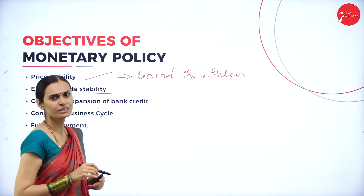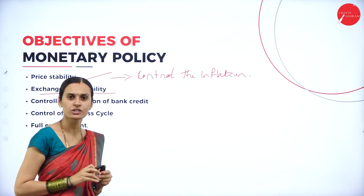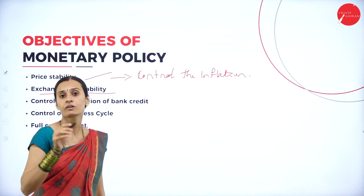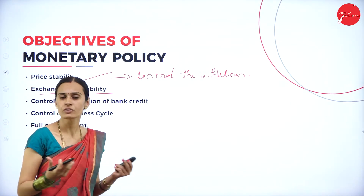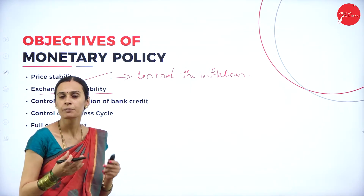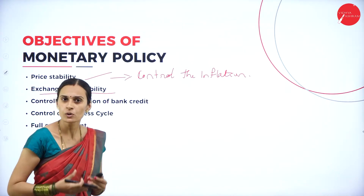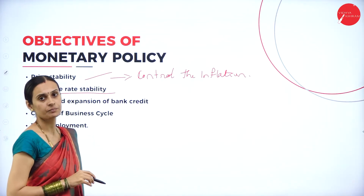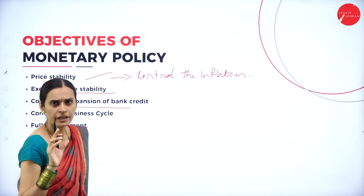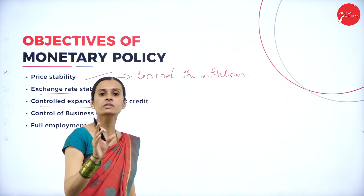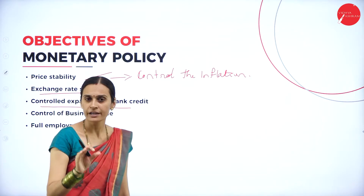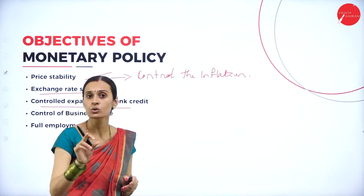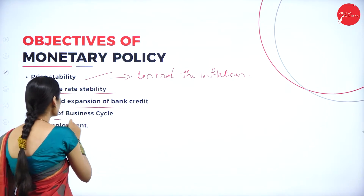The second objective is exchange rate stability, which relates to foreign exchange. The rate of foreign currency is determined by RBI and depends on the general price level of our country. The dollar rate may increase or decrease depending on the inflationary rate. By following price stability in the economic system, RBI tries to maintain the exchange rate system. The third objective is controlled expansion of bank credit — every commercial bank should follow the rules and regulations determined by RBI, which controls all commercial banks and financial institutions.